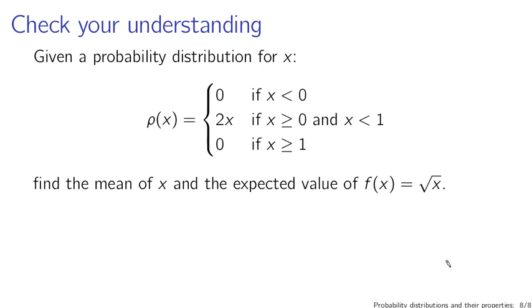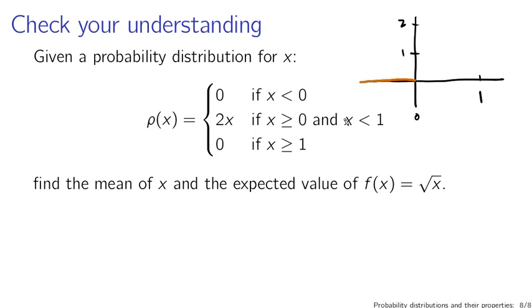To check your understanding, here's a sample problem. The probability density function: it's 0 if x is less than 0, it's also 0 if x is greater than 1, and for x between 0 and 1 it's equal to 2x. Your task is to find the mean of x under this probability distribution, and the expected value of f of x equals the square root of x — two tasks to accomplish with this sample probability distribution.